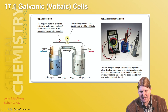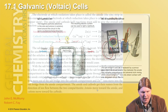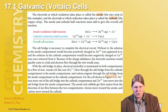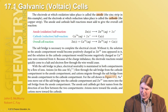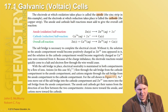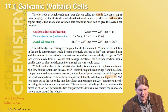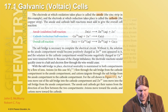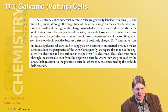The electrode at which oxidation occurs is the anode, and the one at which reduction occurs is the cathode. Anions move toward the anode; cations move toward the cathode.